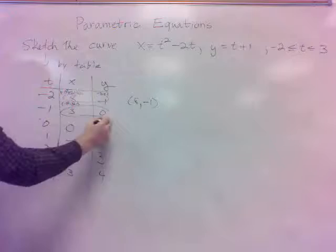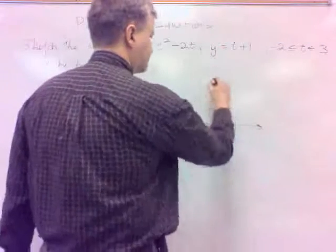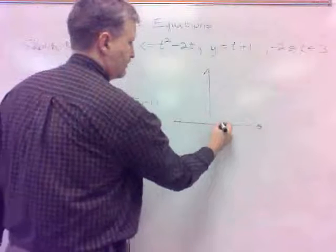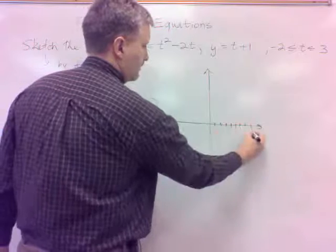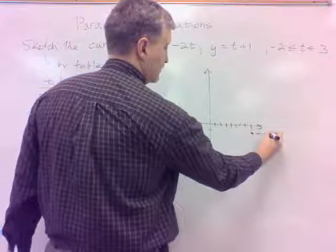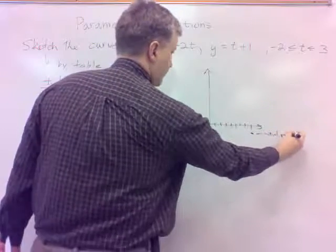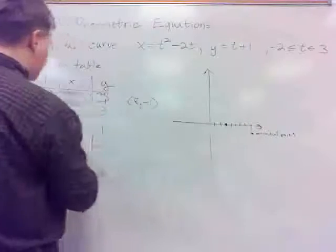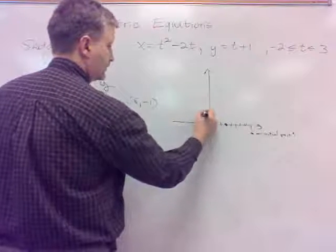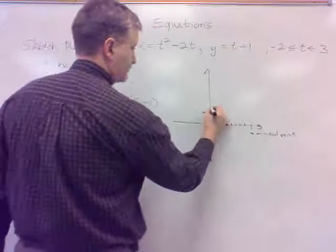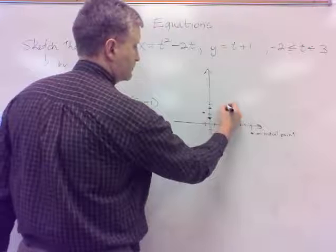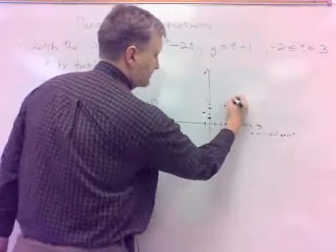We're just going to then, graph-wise, just plug those in on the graph. 8, negative 1. It's right there. And that's called our initial point right there. Then we go to 3, 0. Then we go to 0, 1. Negative 1 and 2. And 0, 3. And 3, 4. So we've got this initial point, and this is our terminal point.